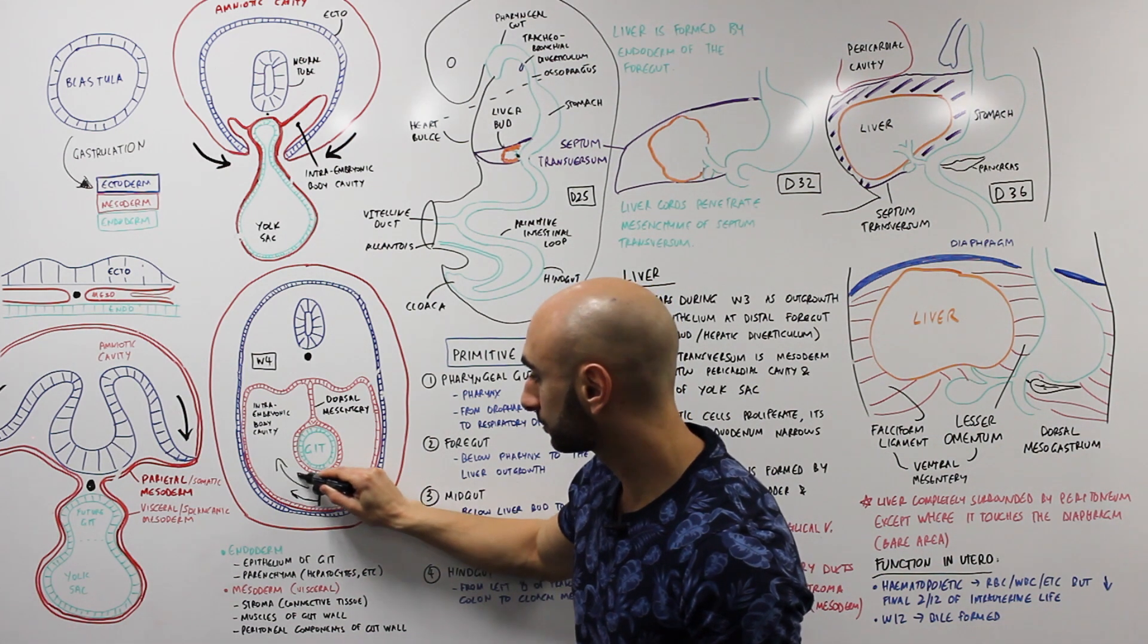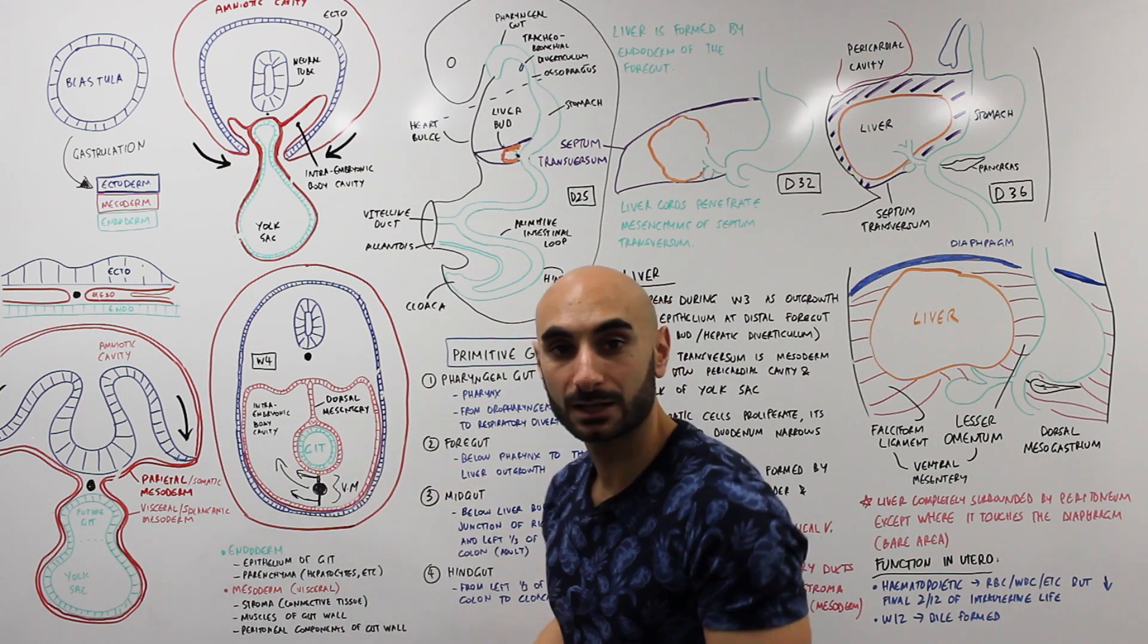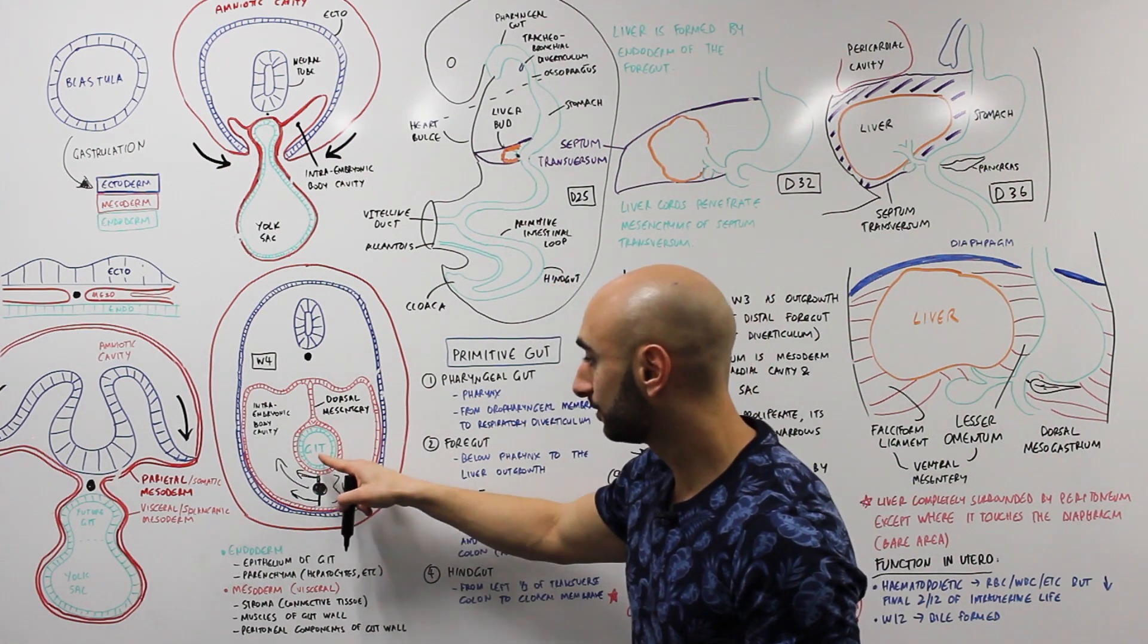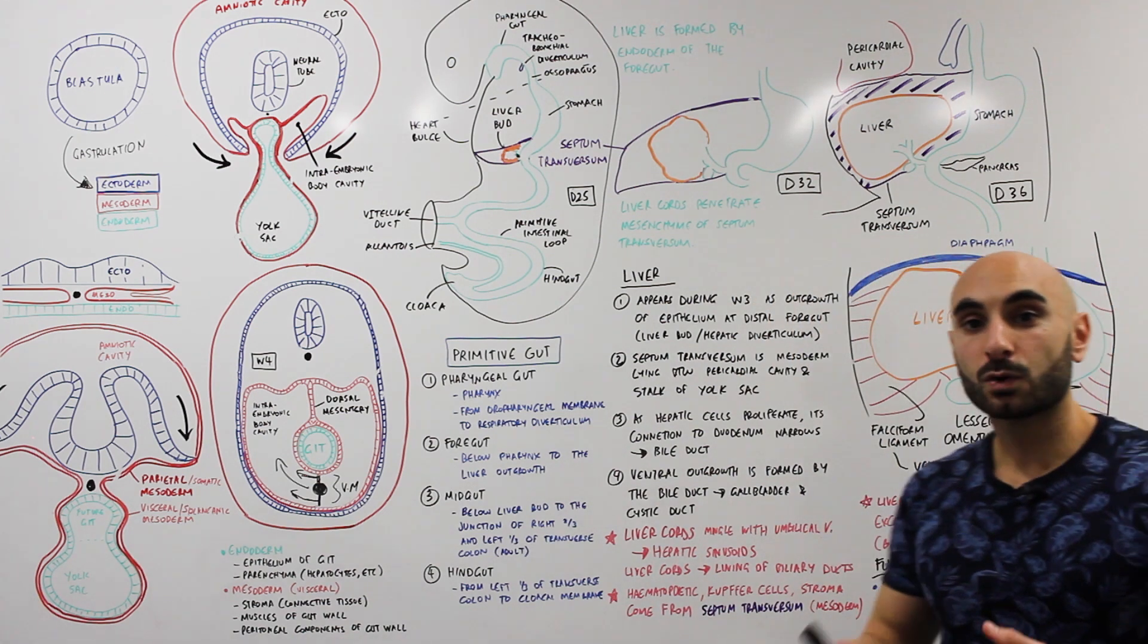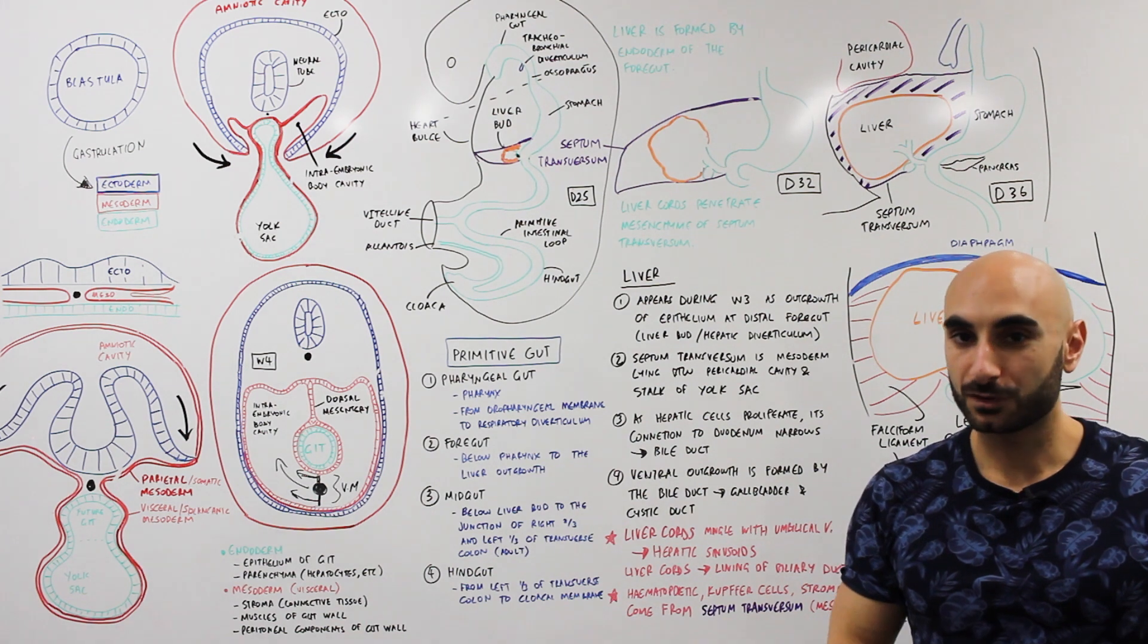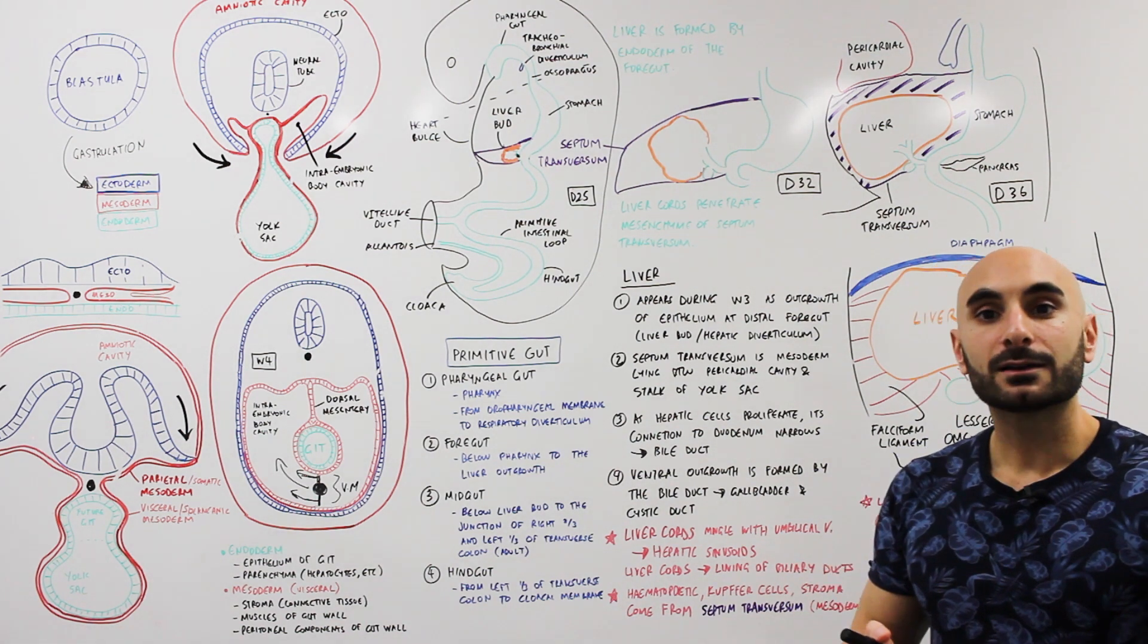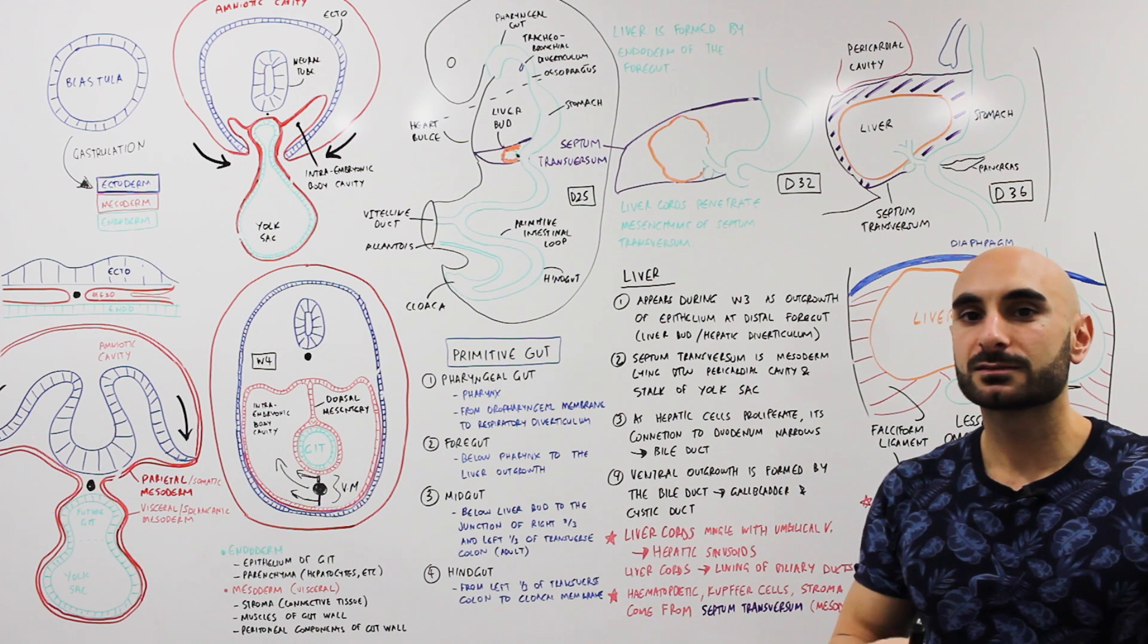So this right here is ventral mesentery where we have the falciform ligament here and the lesser omentum here connecting the liver to the stomach. Finally, let's talk about the function of the liver throughout uterine life.